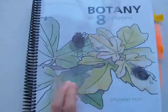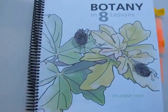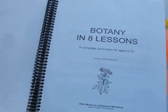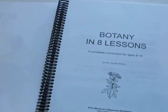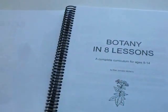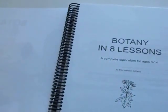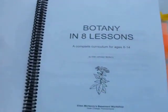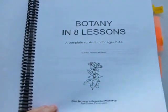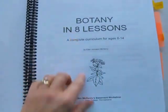On her website it says it's for ages 8 through 14, but it can be used as a high school science credit because it's basically high school biology. It says it can be done in as little as 4 weeks or stretched out to 10 weeks, but it does have 8 lessons.